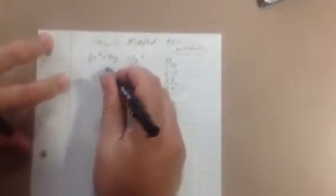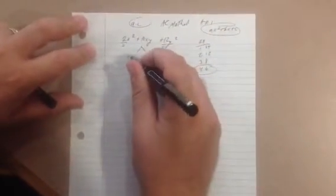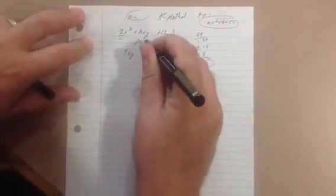You just take the 10xy, regardless of the variable, and break it down into 4 plus 6, because 4 plus 6 is 10 and 4 times 6 is 24. So 4xy plus 6xy equals 10xy.